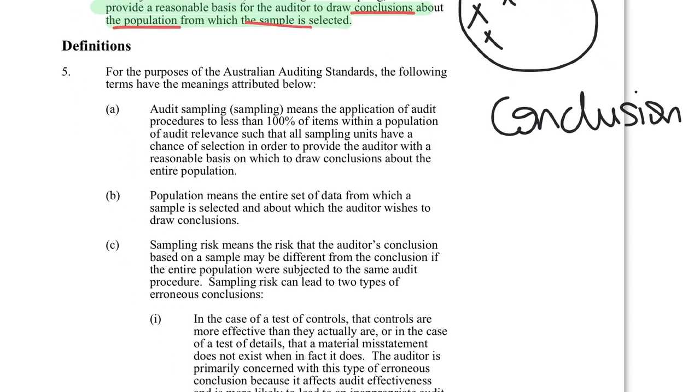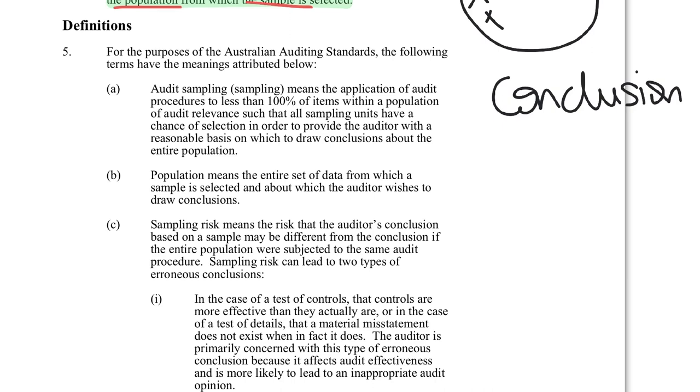So let's look at the definitions just in case you're unaware or unsure. So sampling is when I collect less than 100% of items. So if you're doing an analytical procedure for example there's no sampling because you're looking at everything. Now it says here all sampling units have a chance of selection. The key thing to remember here is that it's not an equal chance. A lot of students often get caught up here in this bit where it says a chance of selection. It's not an equal chance of selection. We might want to give some items more chance than others.